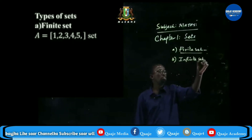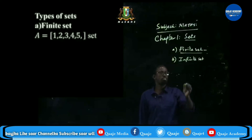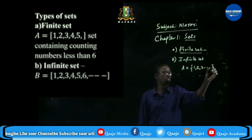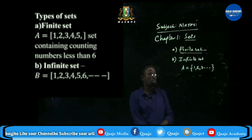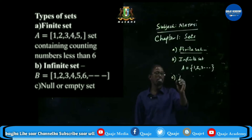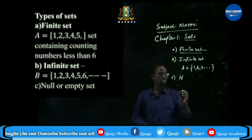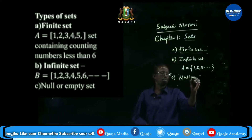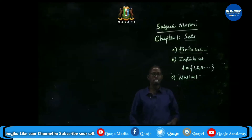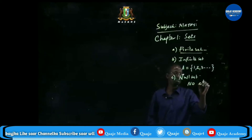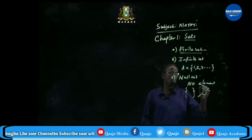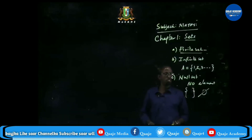Second, we have the infinite set, which contains an unlimited number of elements. For example, {1, 2, 3, ...} and so on. The last type of set is the null set, also called the empty set. This is a set which contains no element. We normally write it as {} or ∅. These are the three types of sets.